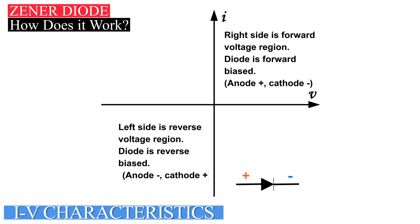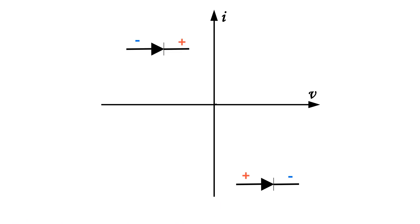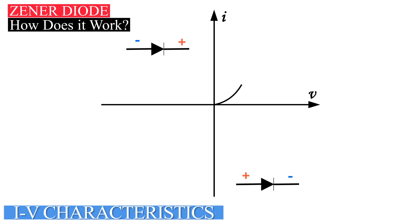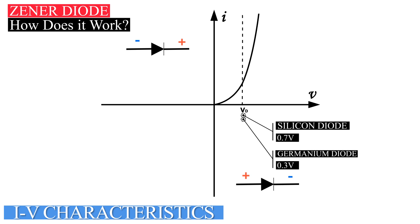A diode has non-linear characteristics. When voltage is positive, current exponentially increases until it reaches value Vd. Vd is diode voltage, and for silicon is 0.7 volts, and 0.3 volts for germanium diodes. For voltages greater than Vd, current rapidly increases and is limited only by resistance in circuit.